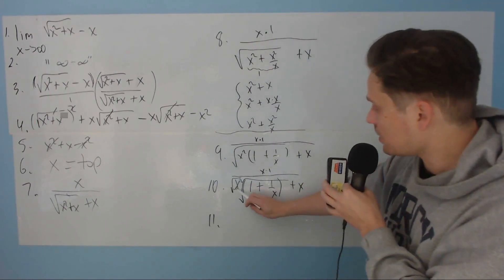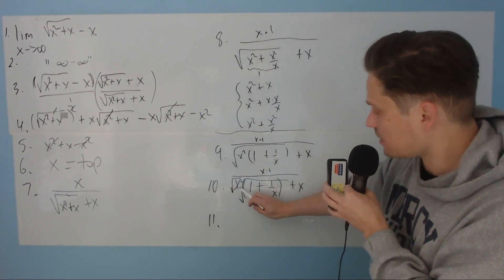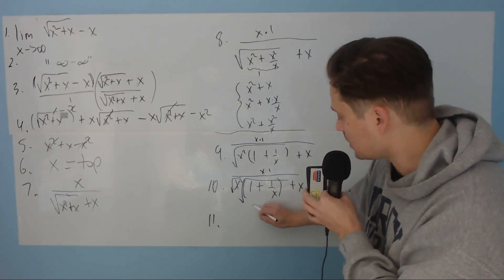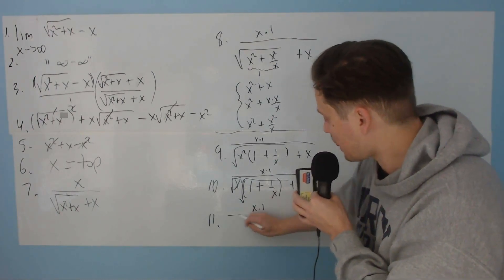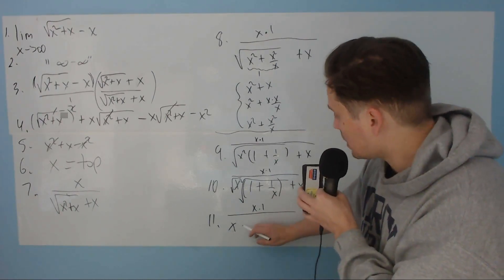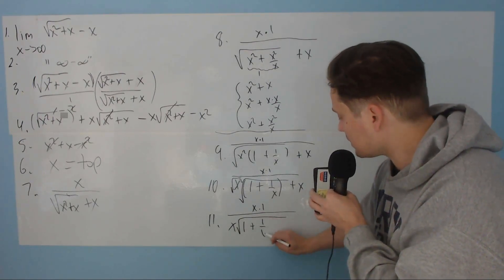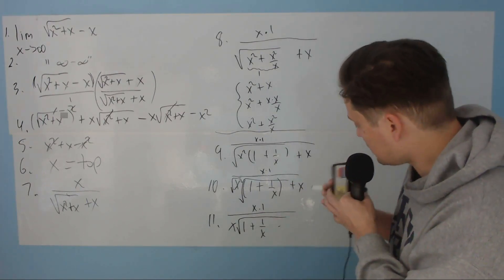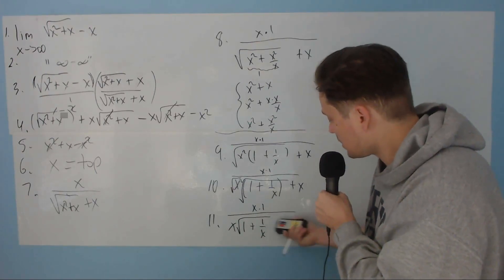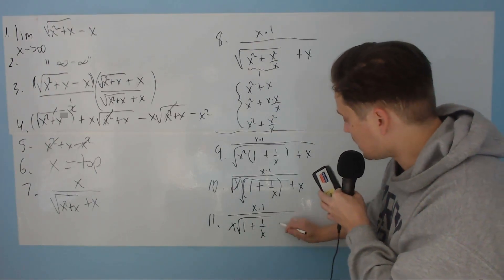Step number 11. Now, you take the root of the squared x. So it becomes like this now. x times 1 over x. And then you have this root here of 1 plus 1 over x. And then plus that x.